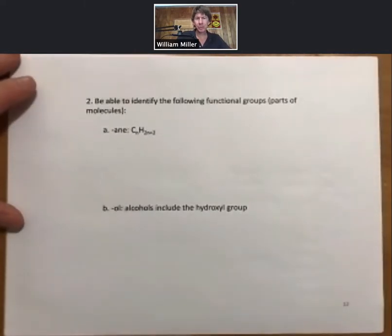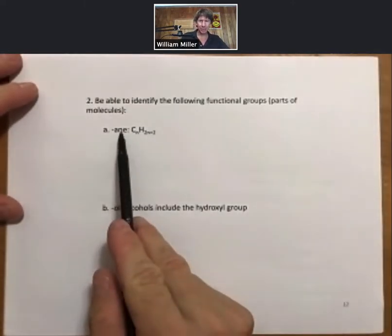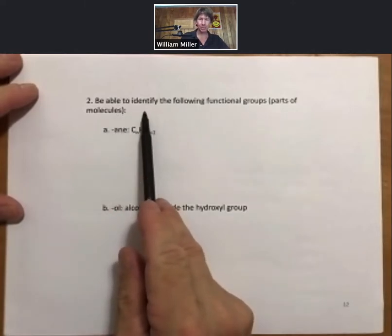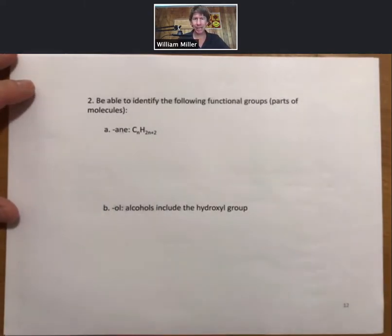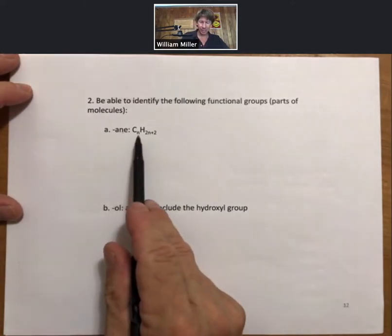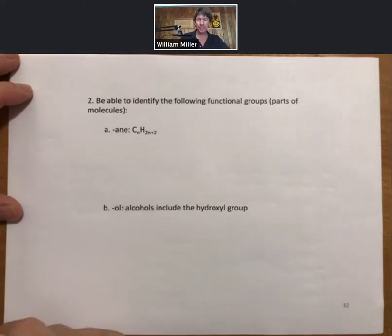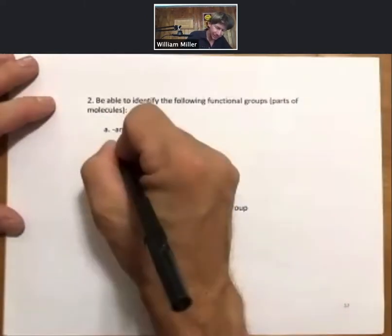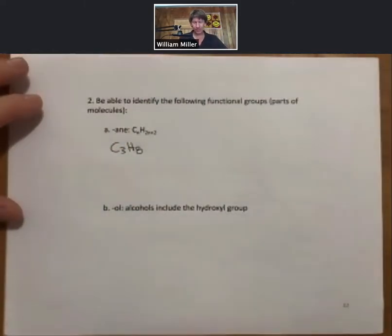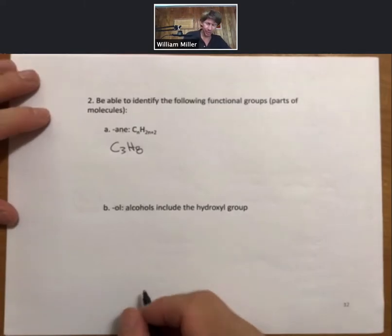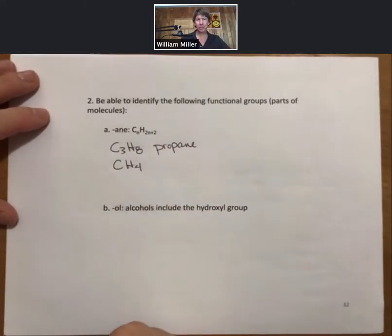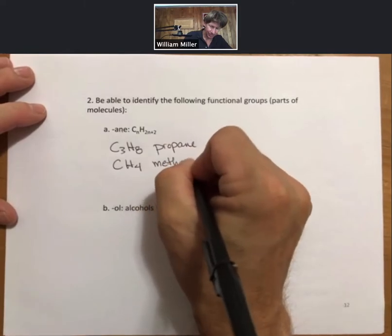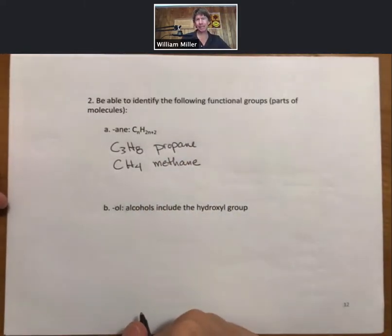And as far as nomenclature goes, we're going to ask you to be able to identify several different types of compounds. Be able to identify the following functional groups, and that's a word for parts of molecules. Anytime you see something with the A-N-E ending, it will have the formula CnH2n+2. For example, C3H8 follows this formula, and it is propane.